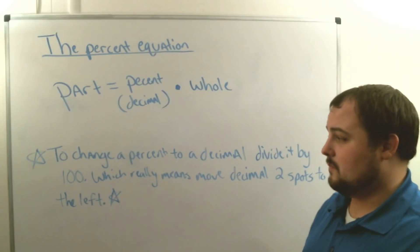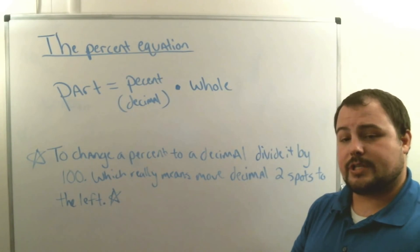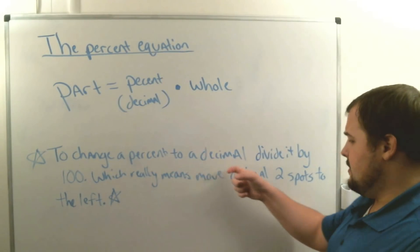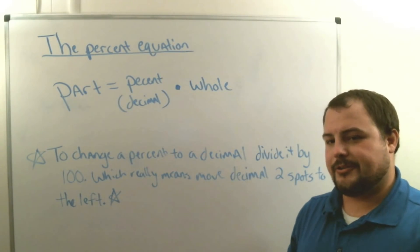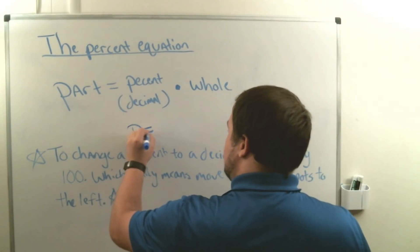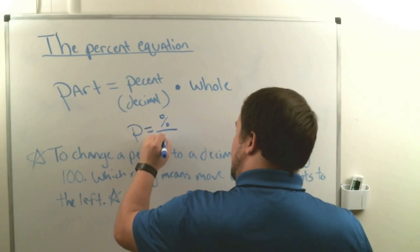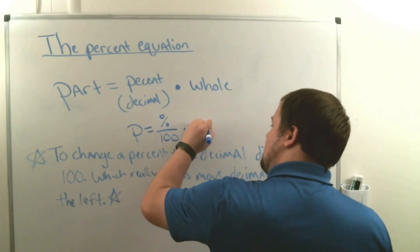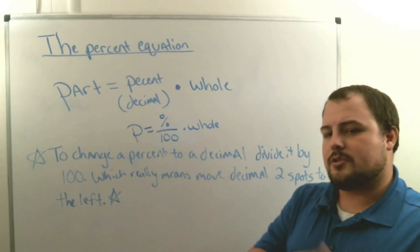To change a percent to a decimal, all you have to do is divide by 100. So our equation becomes: part equals percent divided by 100, times the whole — which is similar to what we were doing before with the percent proportion.